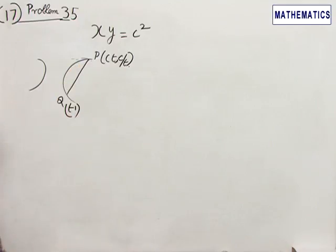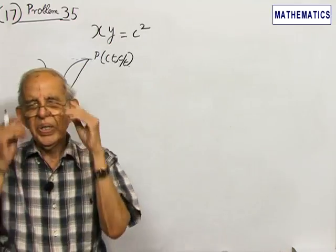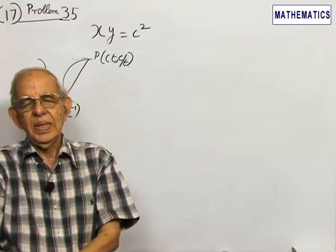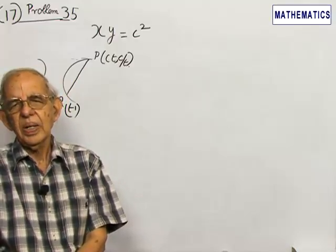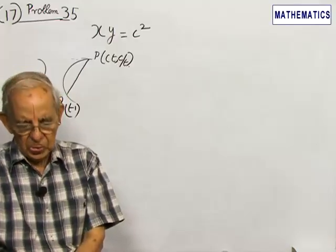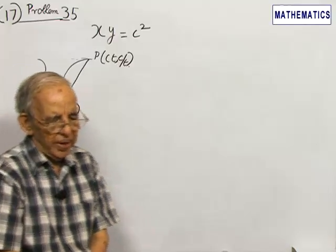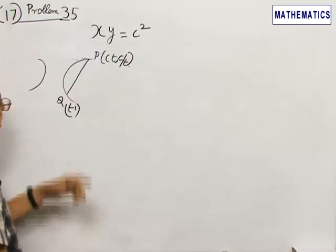The normal at the point P with parameter T meets the hyperbola again at Q with the parameter T dash. You have to find a relation between T dash and T. Four choices are given and you have to choose the correct choice.